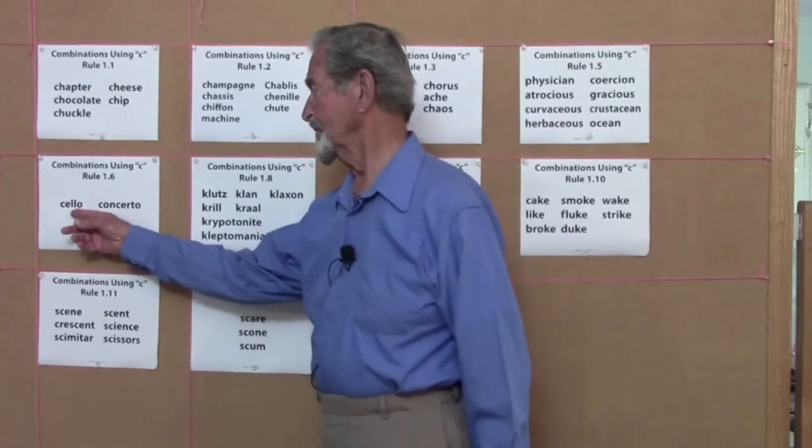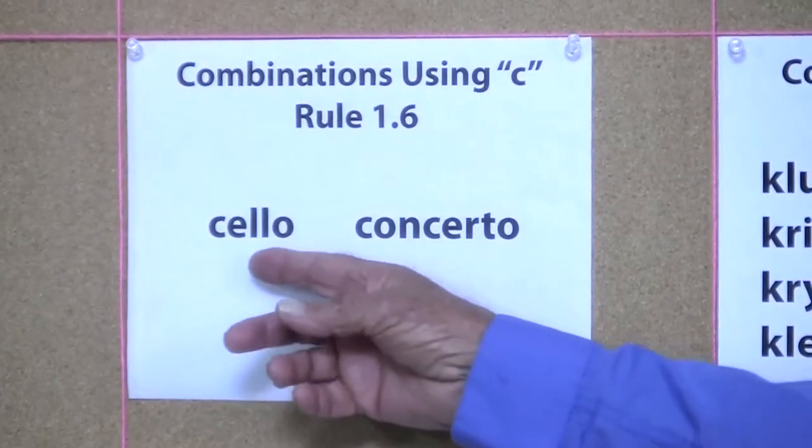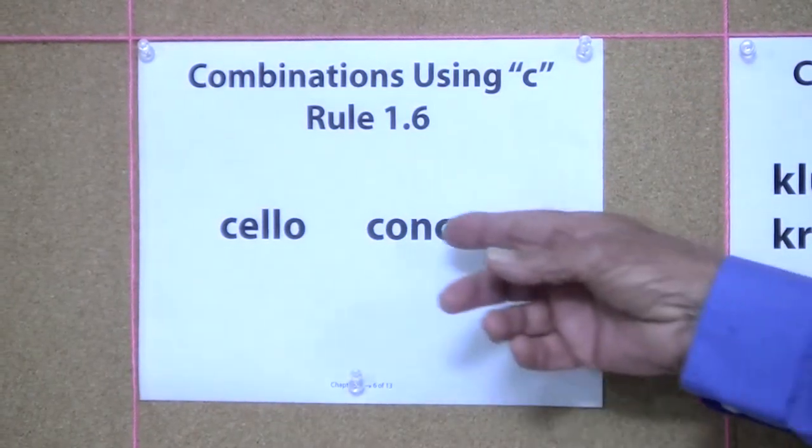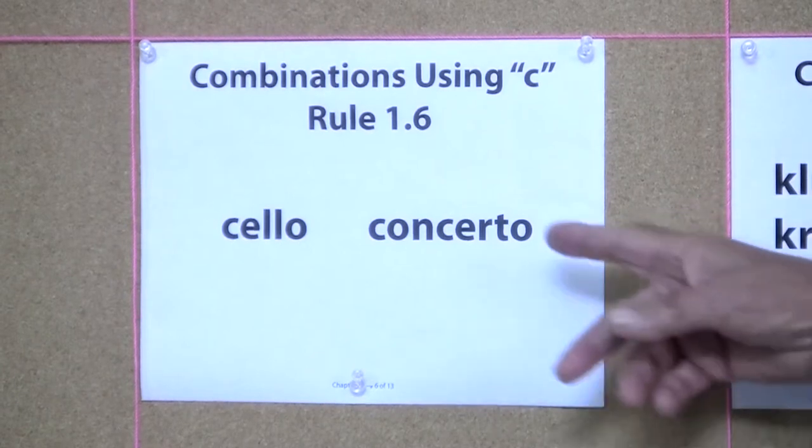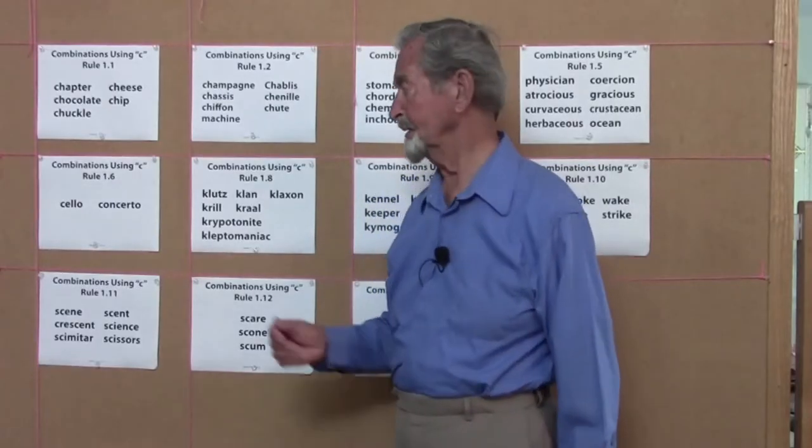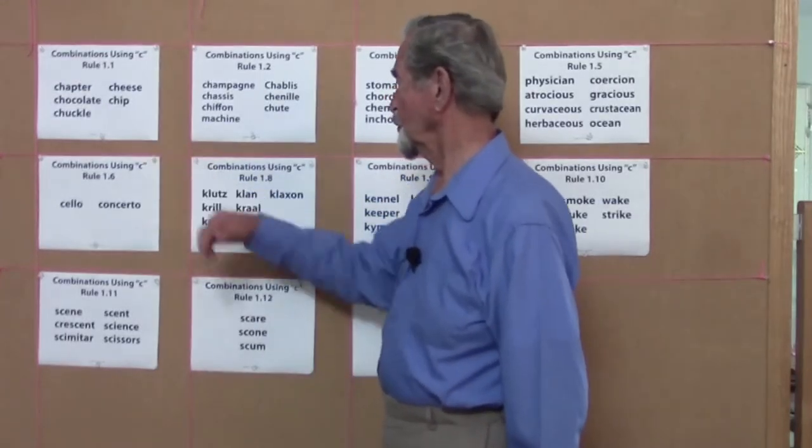Here's a good Italian word: cello. The CE actually giving us the CH sound. Concerto: C-O, a hard K sound, but C-E, certo.